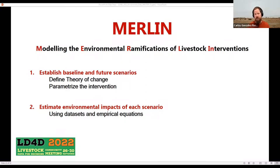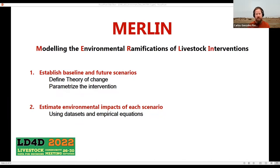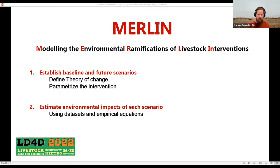Merlin is a quantitative tool developed with Gates Foundation funding aimed at analyzing the environmental impact of different livestock interventions. Not knowing the environmental impact leaves us open to negative unintended consequences, made worse by insufficient monitoring. The way we work with Merlin is: first, we establish the theory of change — what the intervention is trying to do and how actions on the ground lead to that target. We do this by talking to people involved in the intervention: funders, evaluators, practitioners, and reviewing expert interviews and literature. The objective is to parameterize the production systems before and after the intervention, then use global datasets on livestock systems, resource use, and environmental impacts to estimate environmental impacts.